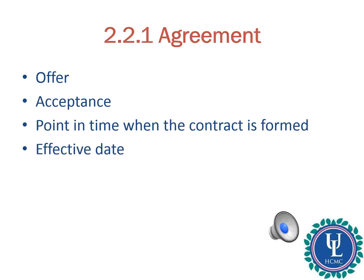Similar to U.S. Law, under Vietnamese Law, agreement means the meeting of the minds of the parties involved. Different from U.S. Law, where agreement is usually used as one of the essential elements of a valid contract, under Vietnamese Law we refer to agreement and contract interchangeably.